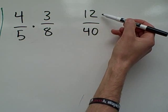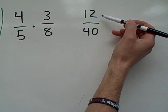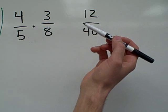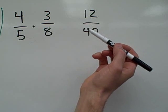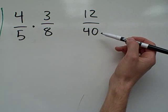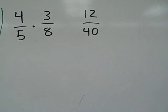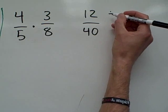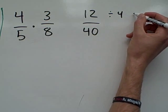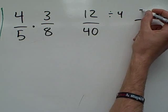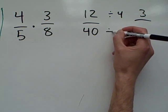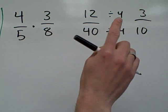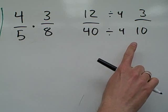Look at these two lovely numbers. Both twelve and forty have a common factor. They're both even, so we know they're divisible by two. But there is another factor: four. We can divide both the numerator and the denominator by four. Twelve divided by four is three. Forty divided by four is ten. That's it — our fraction has been reduced to its lowest terms.